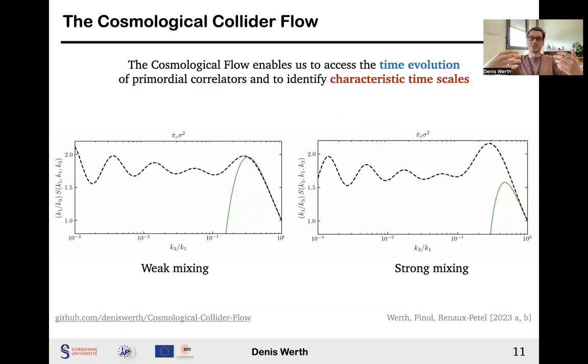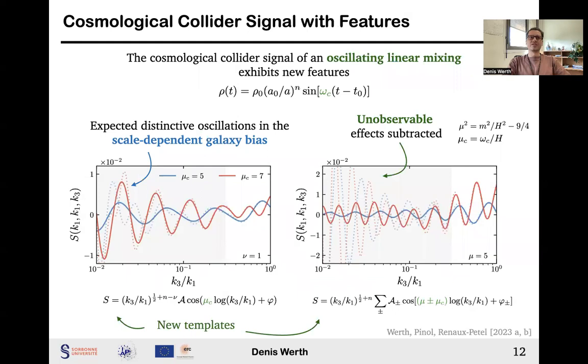And because we follow the time evolution of these correlators, I am now showing the same figure, but as a function of time, displaying how the cosmological collider signals are built differently as inflation proceeds. And this illustrates how the cosmological flow approach can assist our theoretical understanding of inflationary physics, because we have now the opportunity to probe the bulk time evolution of inflationary correlators and identify, for example, characteristic time scales.